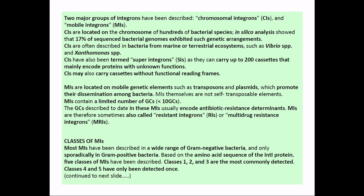CIs are located on the chromosome of hundreds of bacterial species. In silico analysis found that 17 percent of sequenced bacterial genomes exhibit such genetic arrangement. Examples include Vibrio species and Xanthomonas species. CIs are also termed super integrons, as they can carry up to 200 gene cassettes that mainly encode proteins with unknown functions. On the other hand, mobile integrons are located on mobile genetic elements such as plasmids and transposons, which promote their dissemination among bacteria, and they normally carry fewer than 10 gene cassettes.